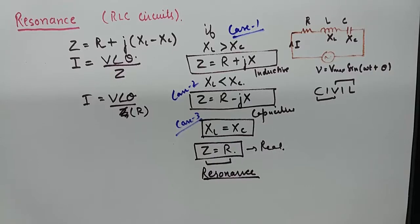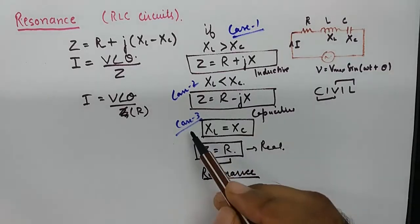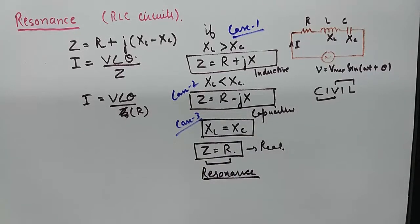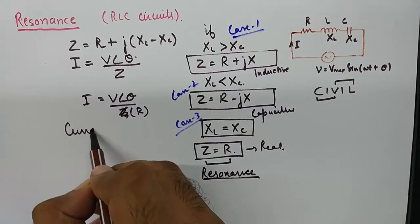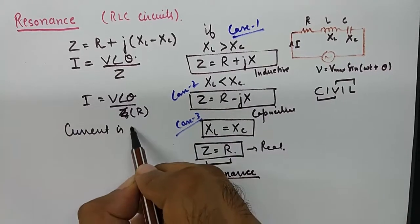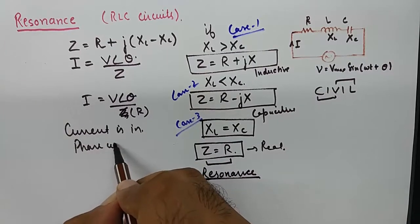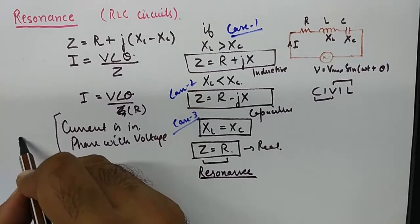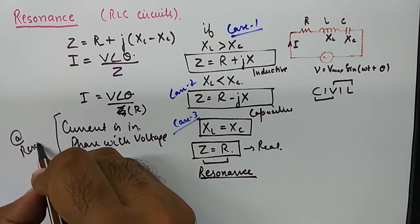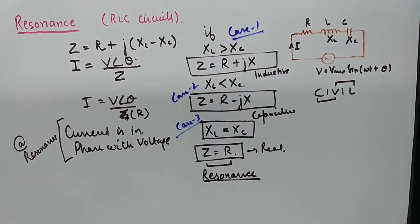That can only happen if XL, the inductive reactance, becomes equivalent to XC, the capacitive reactance. When this condition is met, the current will be in phase with the voltage. So at resonance, current is in phase with voltage.